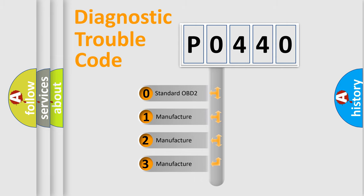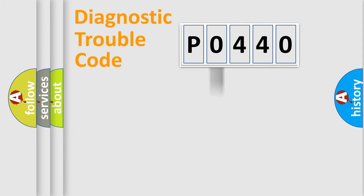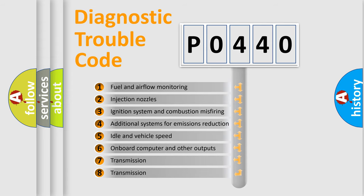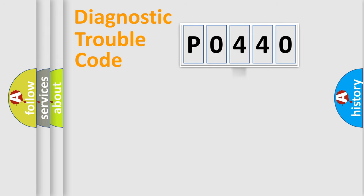If the second character is expressed as zero, it is a standardized error. In the case of numbers 1, 2, or 3, it is a manufacturer-specific error. The third character specifies a subset of errors. The distribution shown is valid only for the standardized DTC code.